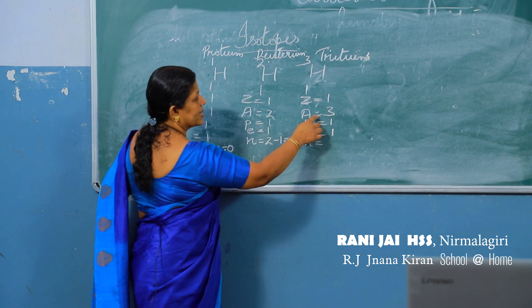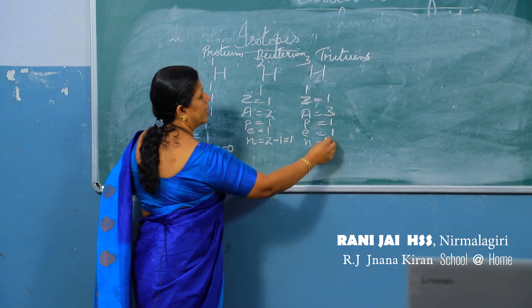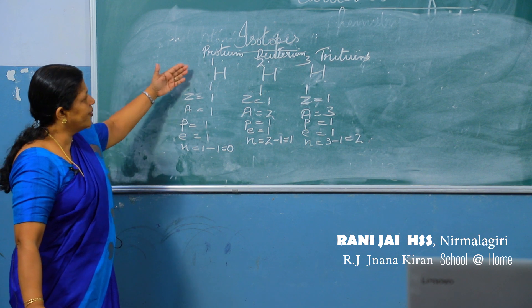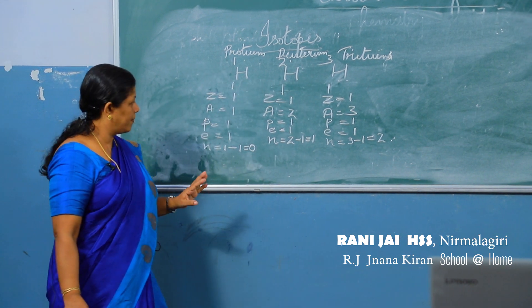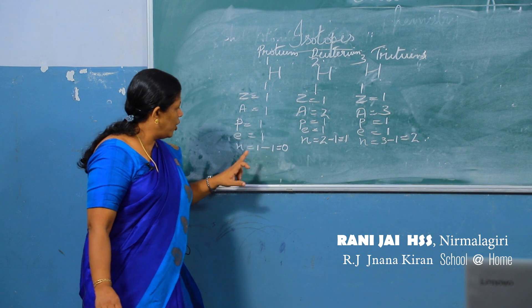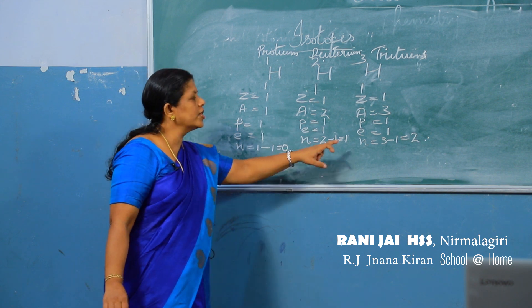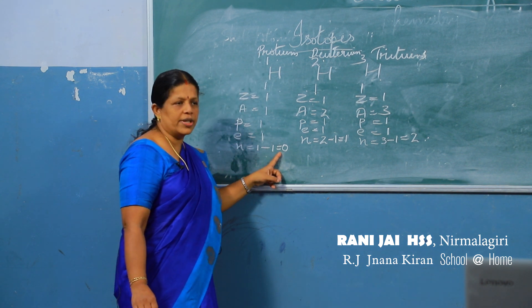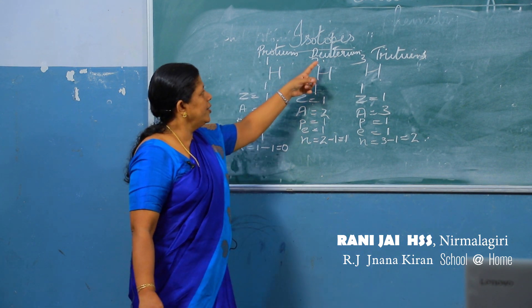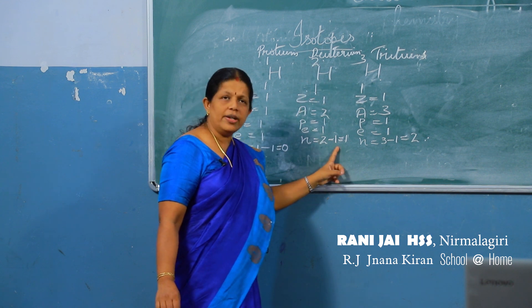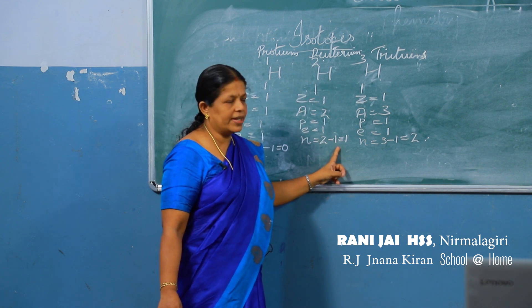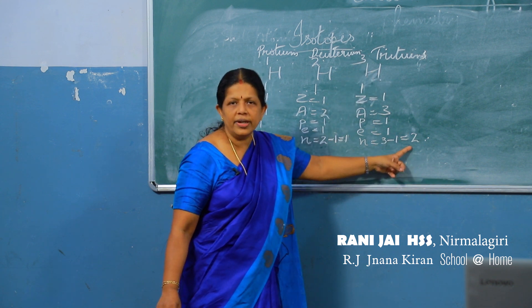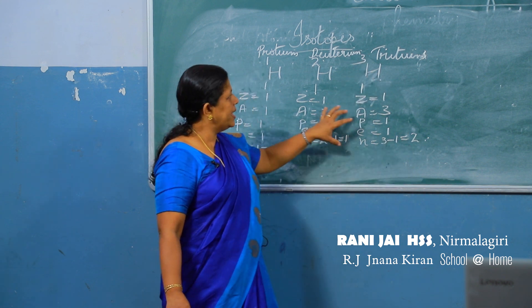In tritium: protons = 1, electrons = 1, and neutrons = mass number minus atomic number = 3 minus 1 = 2. So what is different in these three cases? The mass number is different because the number of neutrons are different. In protium there is no neutron in the nucleus. In deuterium there is one neutron, and in tritium there are two neutrons.